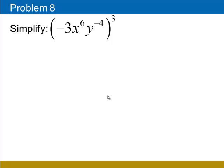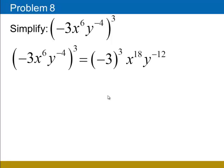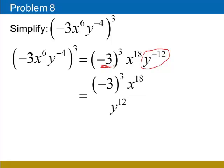In problem 8, it's a similar problem except this time our exponent is 3. We'll raise all three of the bases on the inside to the 3rd power. The only base that's going to move to the denominator is y, because y has a negative exponent. Although negative 3 is a negative number, that does not mean we move that base to the denominator — we only move bases with negative exponents, not negative numbers. We move y to the negative 12th to the denominator, changing its exponent to positive. Negative 3 to the 3rd power is negative 27. As a good rule, any time you have a base that's a number, be sure to raise that base to the indicated power.